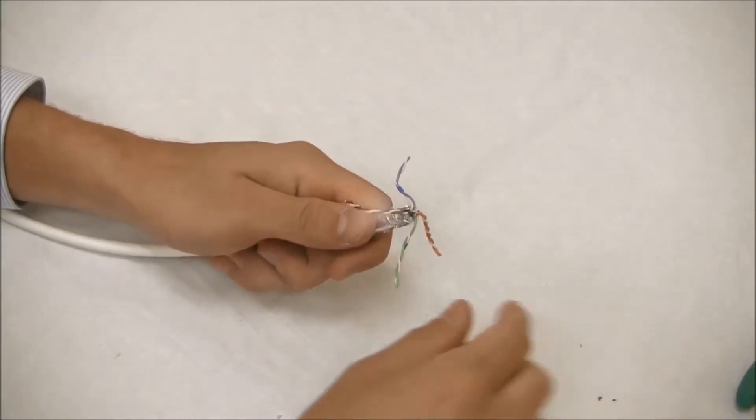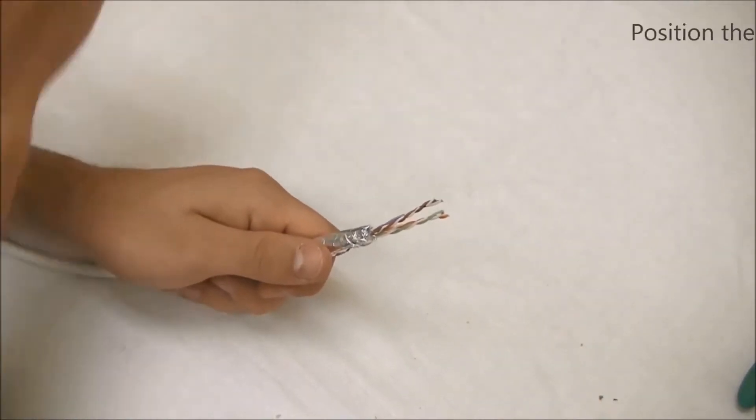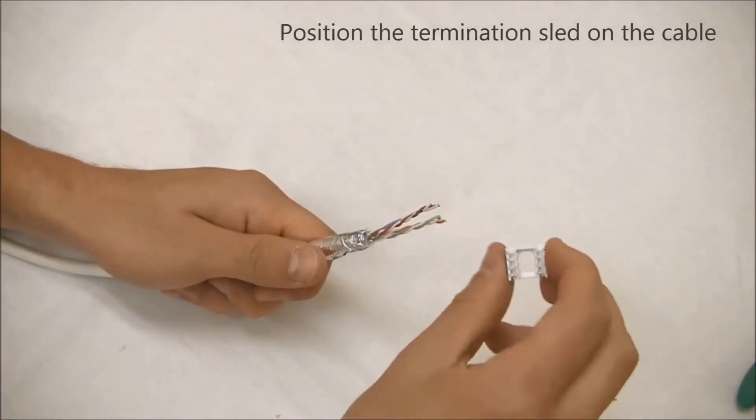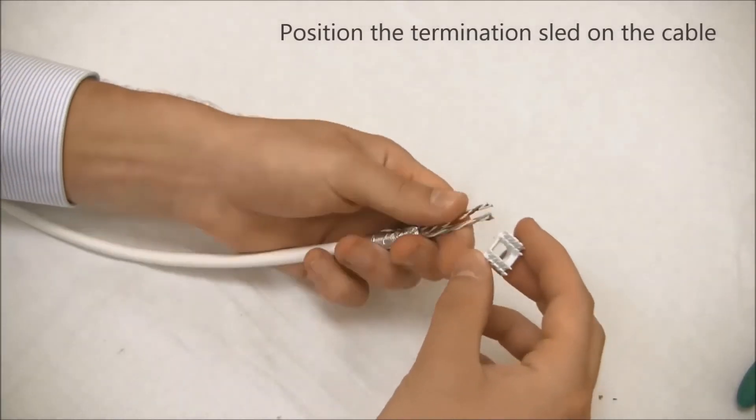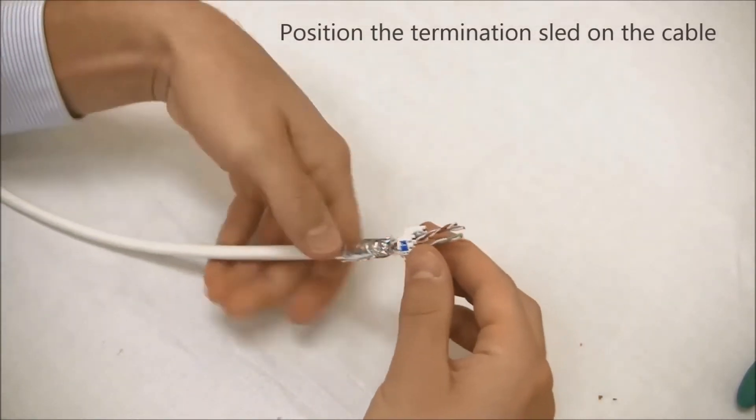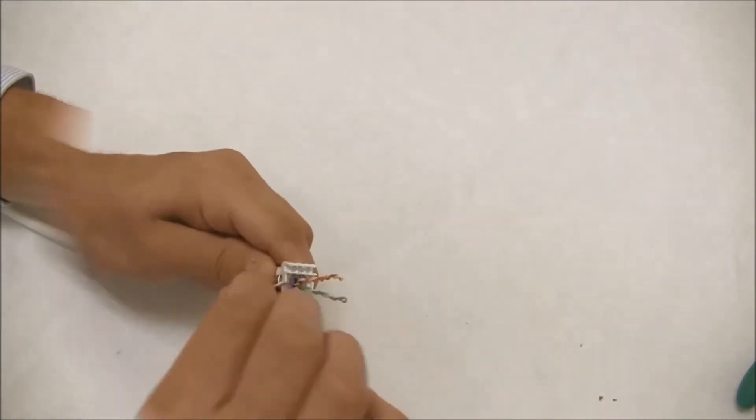Now that the inner wires are exposed, firmly push them through the center hole of the bottom of the sled, having it fit snugly against the shielding. Orient the sled by twisting it in order to match the colors on its face to the colors of the wires.